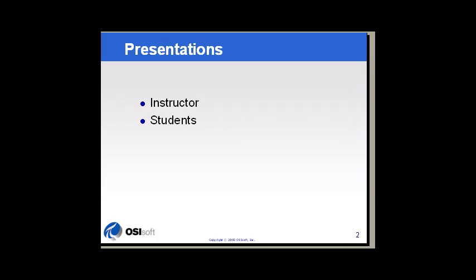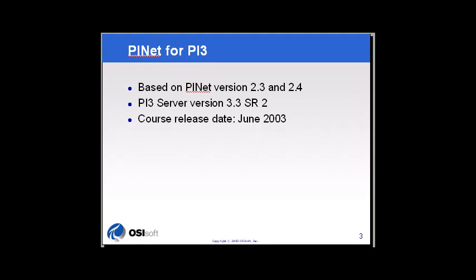I'm Chuck Thompson, part of the field service group at OSI. I also help with training, documentation, and special orders related to our products running on OpenVMS. I've been working with OSI since December 1987. We will be working with PI-Net version 2.3 and 2.4 during our course, and we will be using OpenVMS versions 7.2 and 7.3. Our PI 3 version will be PI 3.3 Service Release 2, plus a number of patches available from the OSI Tech Support website.